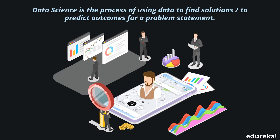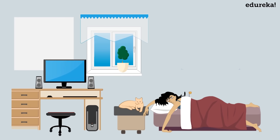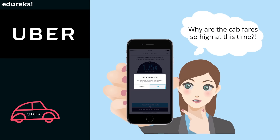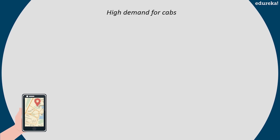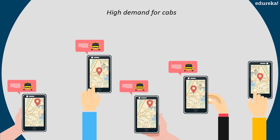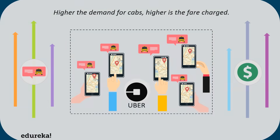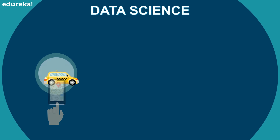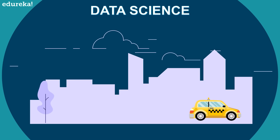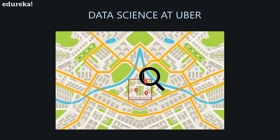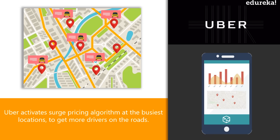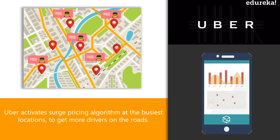To better understand data science, let's see how it affects our day-to-day activities. It's a Monday morning and I have to get to the office before my meeting starts, so I quickly open up Uber and look for cabs — but the cab rates are comparatively higher at this hour. Why? Because Monday mornings are peak hours and everyone is rushing off to work. The high demand for cabs leads to an increase in cab fares. Data science is at the heart of Uber's surge pricing algorithm, which ensures that passengers always get a ride when they need one, even at inflated prices. Uber implements data science to find out which neighborhoods will be the busiest so it can activate surge pricing to get more drivers on the road.